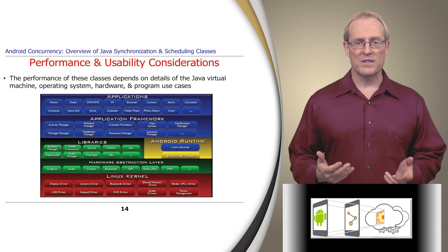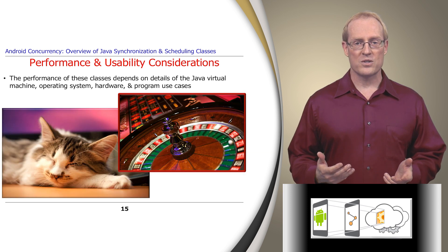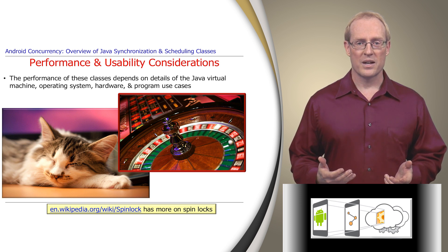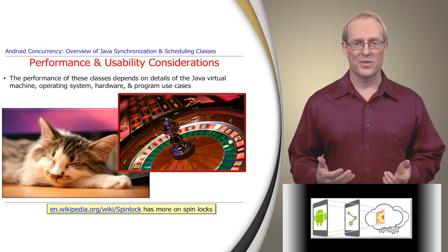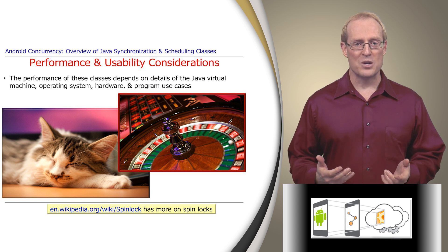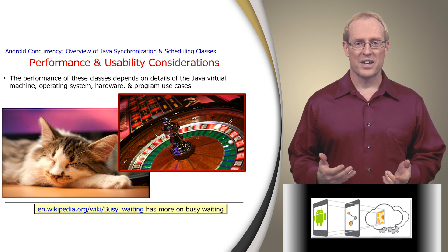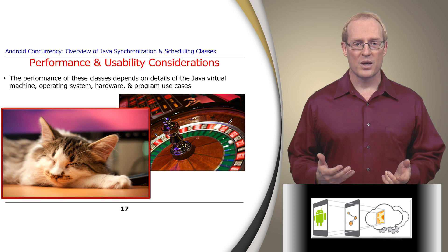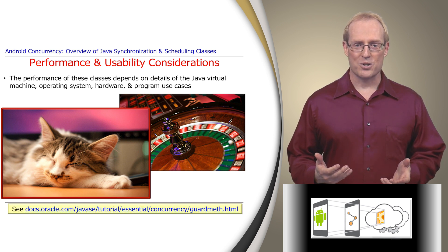There are various ways of implementing these classes. One alternative involves so-called spin locks, described at this link, that busy wait without sleeping until the lock is acquired. Spin locks often use low-level hardware test-and-set operations to implement mutual exclusion. These hardware operations are fast, but can incur the overhead of busy waiting, described at this link. An alternative is sleep locks, where the system puts a thread to sleep until it may be able to make progress again, which is often used for semaphores and condition objects, as described at this link.